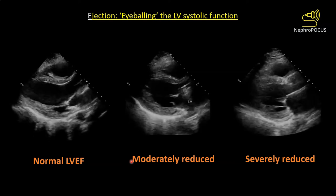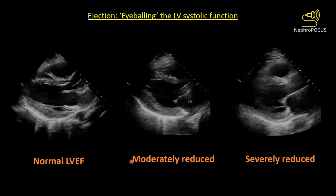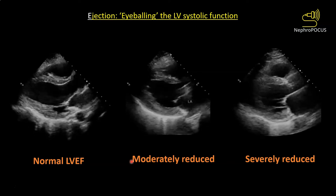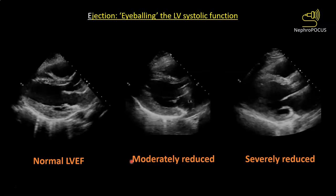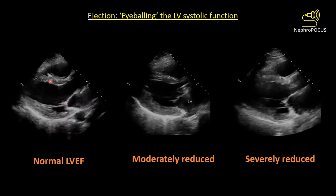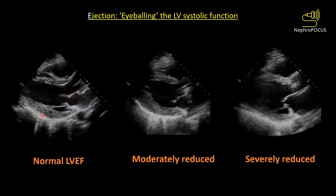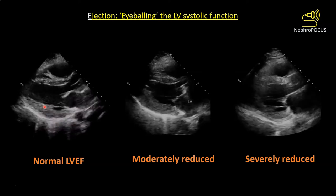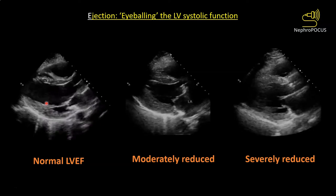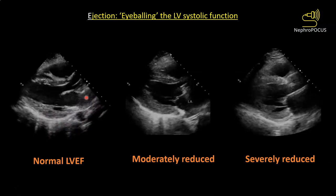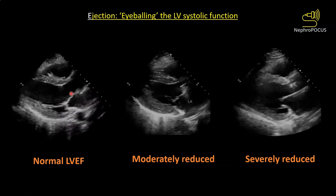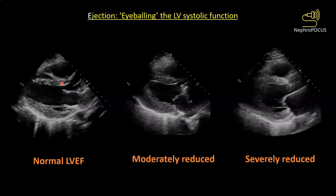The next E is ejection — left ventricular ejection or systolic function. For focused cardiac ultrasound you can eyeball and get a sense of whether the left ventricular ejection fraction is reduced or normal. When ejection fraction is normal, the LV walls thicken during systole and come close to each other by at least 25 percent, and the anterior leaflet of the mitral valve almost touches the interventricular septum during diastole.